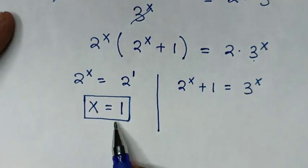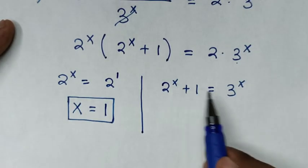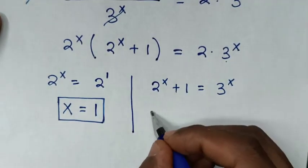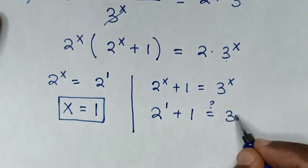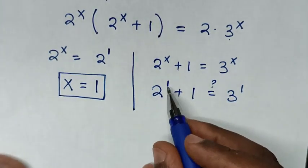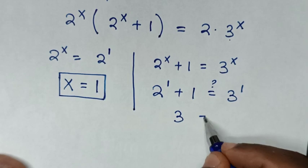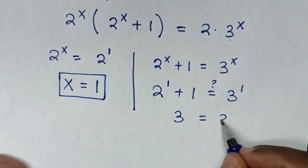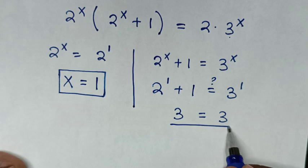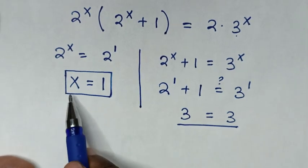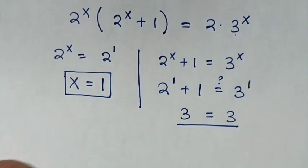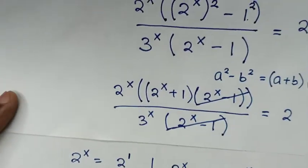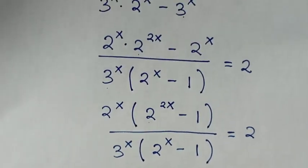To check: substituting x equals 1 into 2^x plus 1 equals 3^x gives 2^1 plus 1 equals 3^1, which is 2 plus 1 equals 3, and 3 equals 3. Left side and right side are equal, so x equals 1 is confirmed. Thank you — please like and subscribe to my channel, and see you in the next video. Bye-bye!